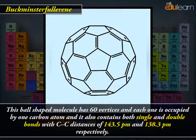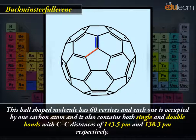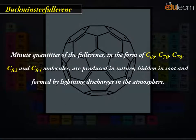This ball-shaped molecule has 60 vertices and each one is occupied by one carbon atom. It also contains both single and double bonds with C-C distances of 143.5 pm and 138.3 pm respectively. Minute quantities of fullerenes in the form of C60, C70, C76, C82 and C84 molecules are produced in nature, hidden in soot and formed by lightning discharges in the atmosphere.